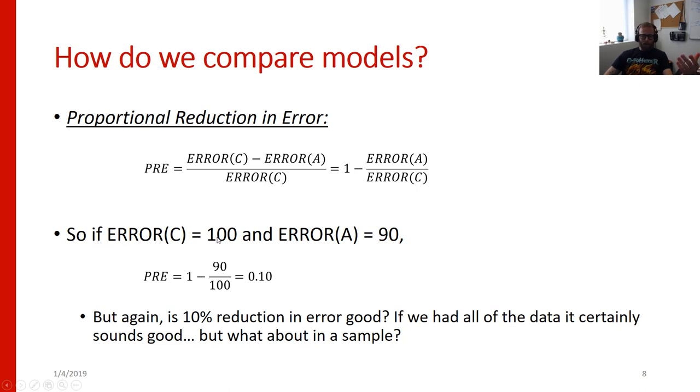So if the error in the compact model was 100 for the sake of argument, and the error in the augmented model was 90, the proportional reduction in error would be 1 minus 90 over 100 or 10%. And 10% may or may not be very good. It kind of depends on what is the variable that we're talking about and how much variation is there. But at least by putting it into a proportional reduction in error, we can now actually establish some rules for PRE across many different types of models and many different types of variables. Because now it doesn't matter if we measured 10 people or 100 people or 10,000 people. As our sample size changes, we're normalizing based on the errors that we observe in the sample. So we're going to have a proportional reduction in error that we can use as a very useful statistic across many different types of situations.